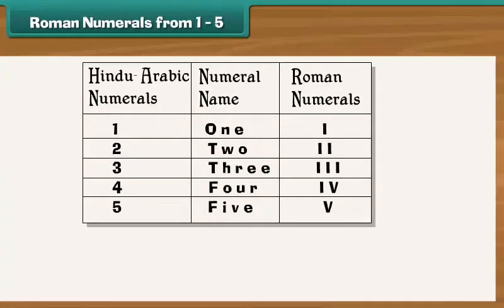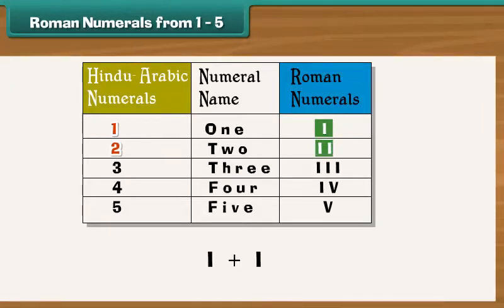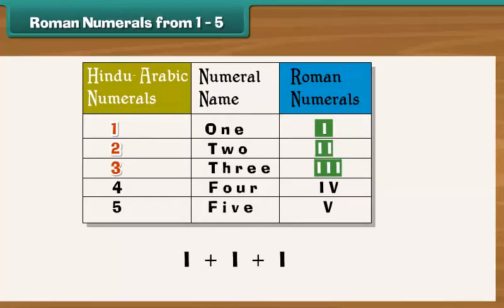Roman numerals from 1 to 5. The Roman numeral corresponding to the Hindu-Arabic 1 is I. As 2 is 1 plus 1, it is written as 2 I's. Similarly, as 3 is 1 plus 1 plus 1, it is written as 3 I's.